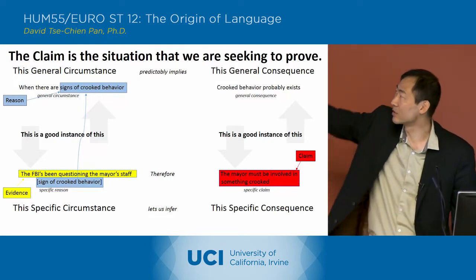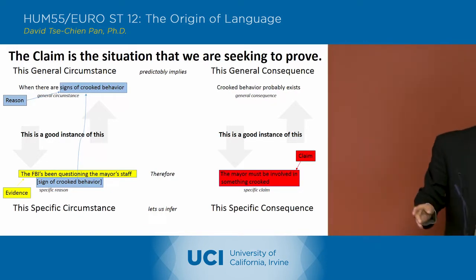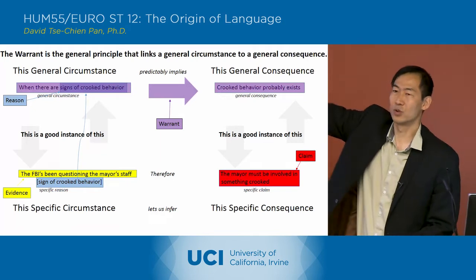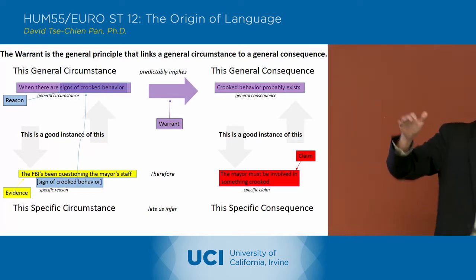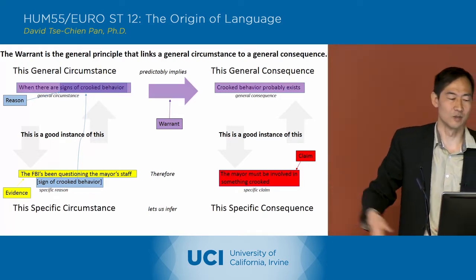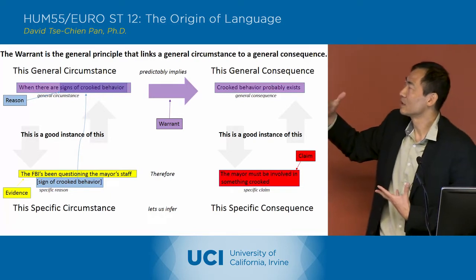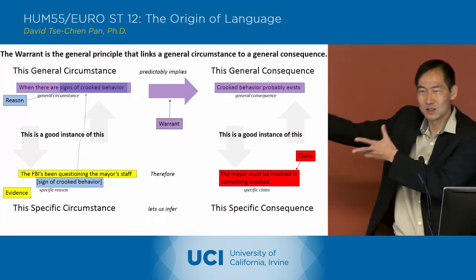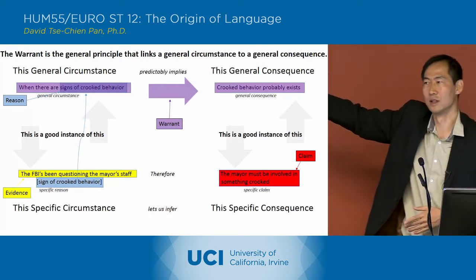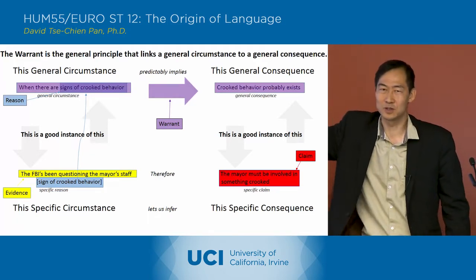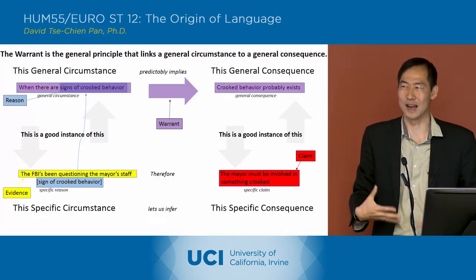Then we have the claim — the specific claim we're talking about. The way we're linking it up is through this warrant. Their argument is that the warrant is this general rule — signs of crooked behavior — linking it to the general consequence. According to their explanation, the warrant is the general rule that allows us to make the specific connection between the specific reason and the specific claim. That's how they've laid it out.